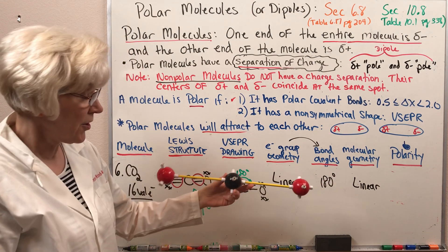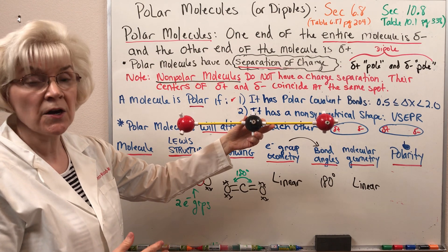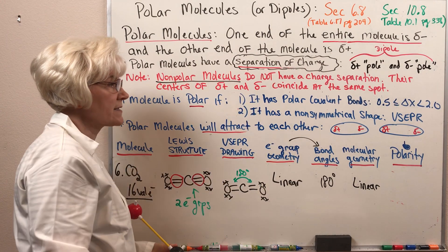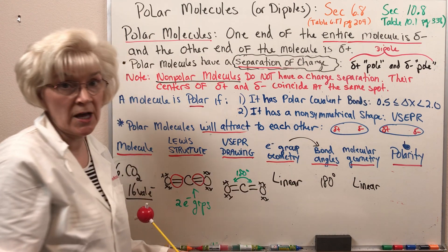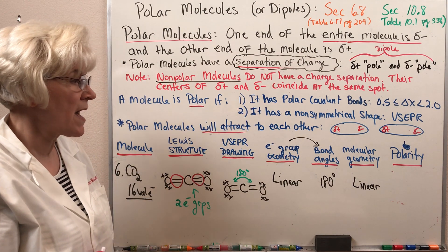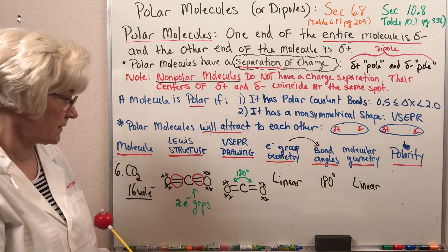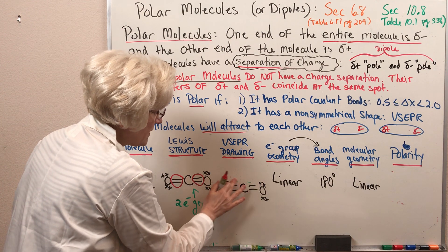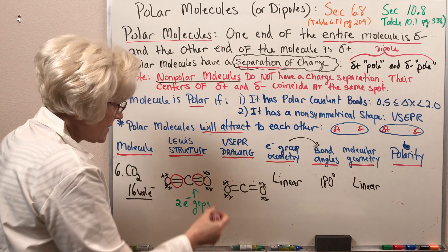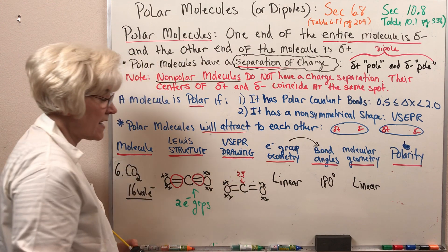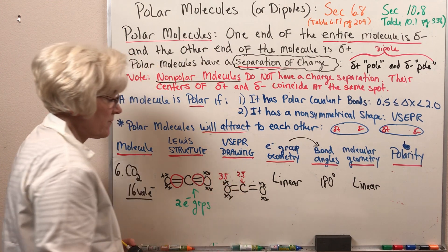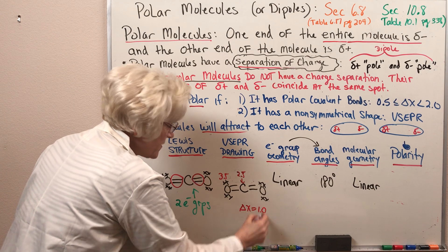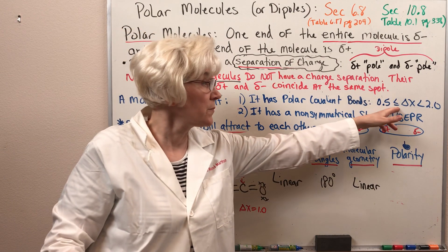Now we're ready to determine the polarity of carbon dioxide. Does carbon dioxide have polar covalent bonds? Does it have a non-symmetrical shape? Both criteria must be met. Carbon has an electronegativity of 2.5, oxygen 3.5 — just as in formaldehyde, that same carbon-oxygen bond has a difference in electronegativity of one, placing it squarely in the polar covalent bond range.